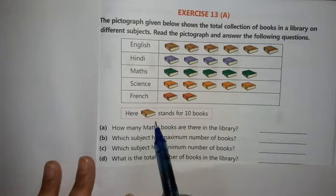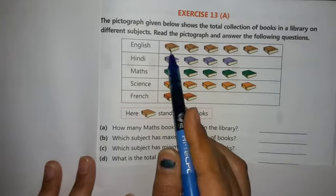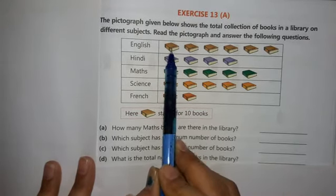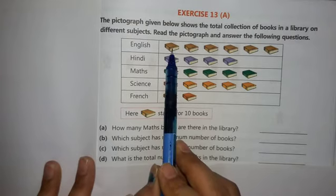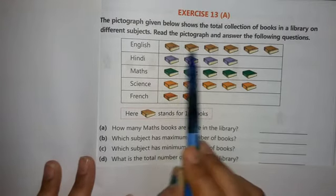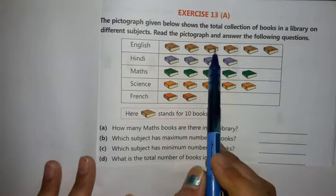Here it is written that one book symbol represents ten books. That means if there is a single symbol in front of English, this one equals ten books. So how many books are shown here? One, two, three, four, five, and six. That means these are sixty books. You have six given, multiply by ten, which equals sixty.